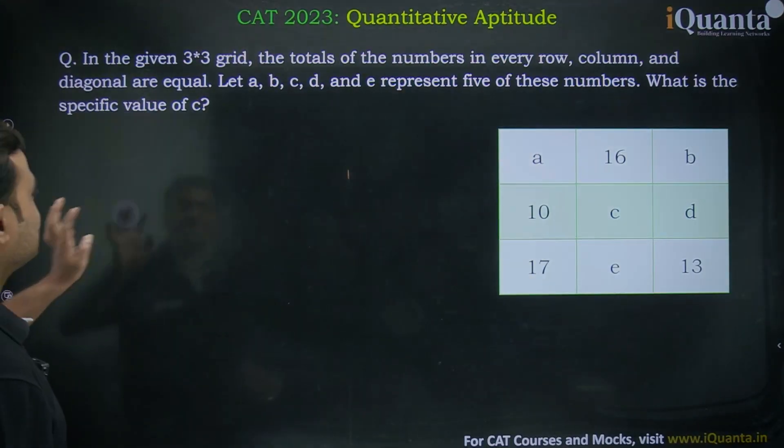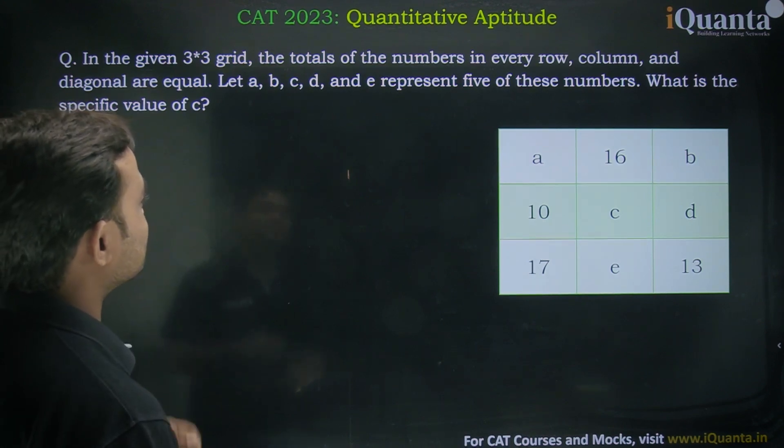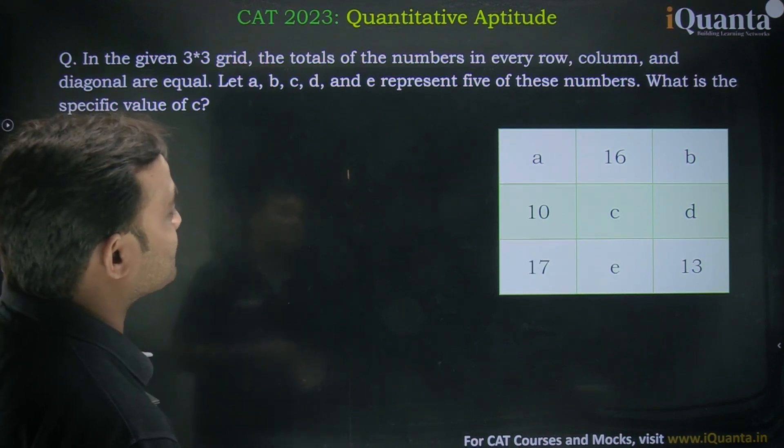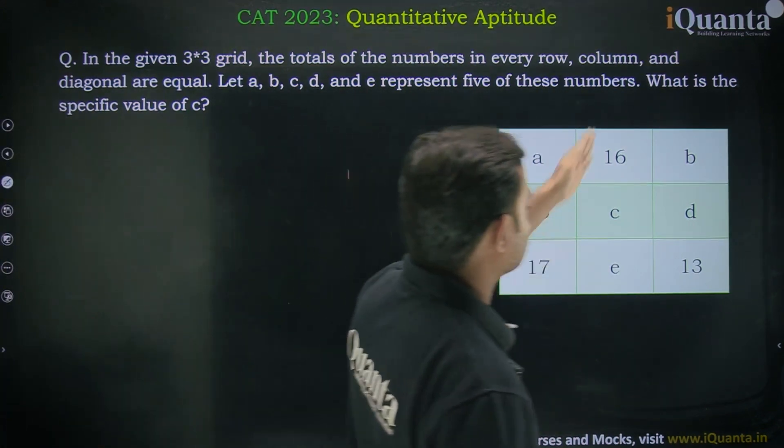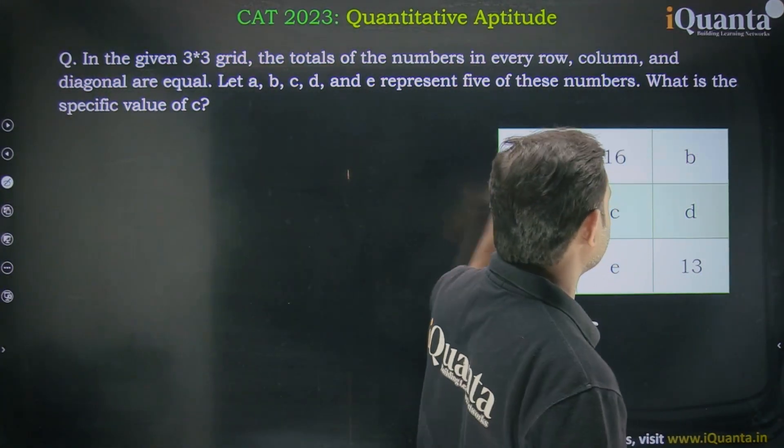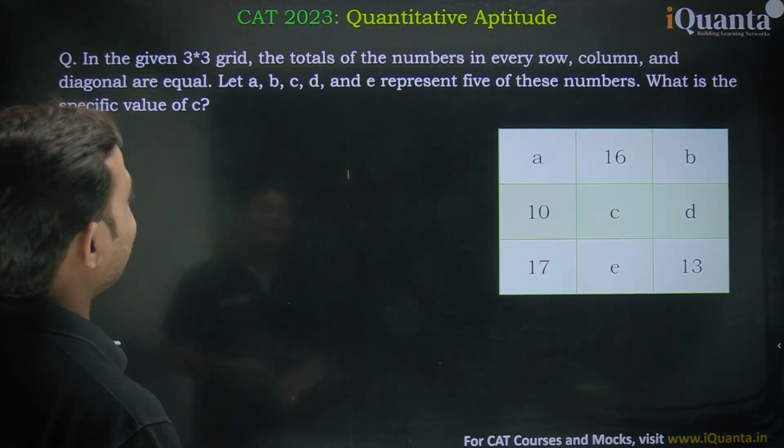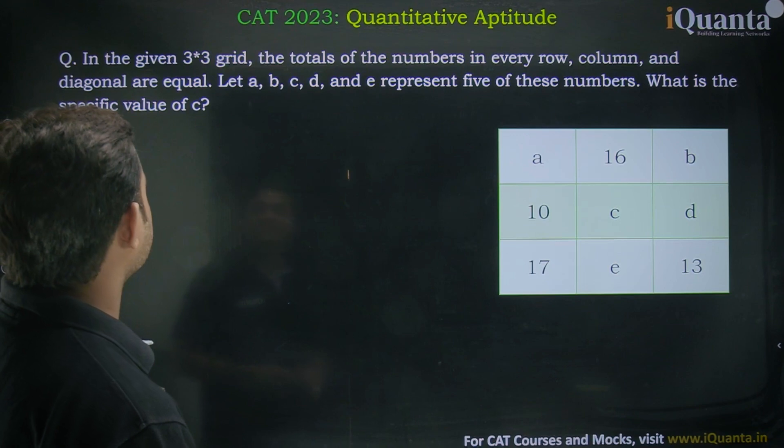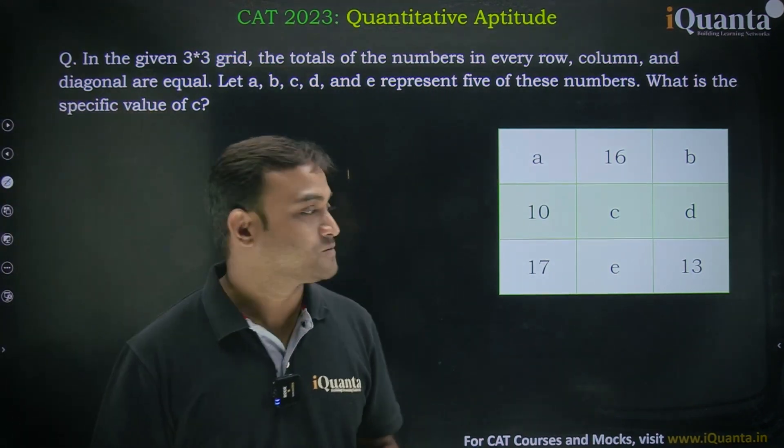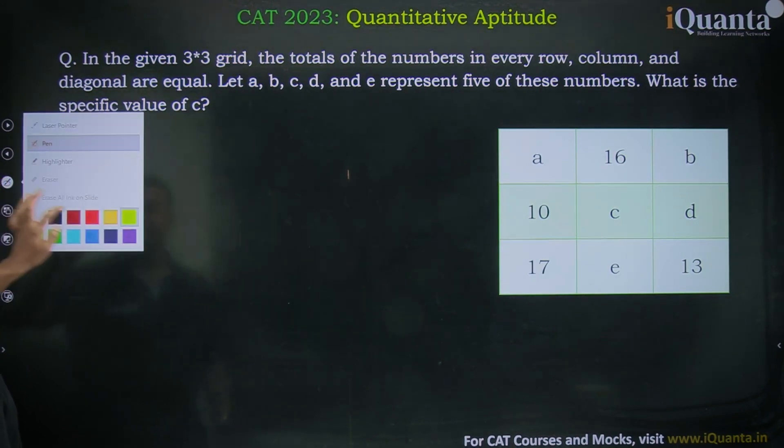In the given 3×3 grid, the totals of the numbers in every row, column, and diagonal are equal. Let a, b, c, d, and e represent five of these numbers. What is the specific value of c? We need to find the specific value of c. Let's see how to solve it.